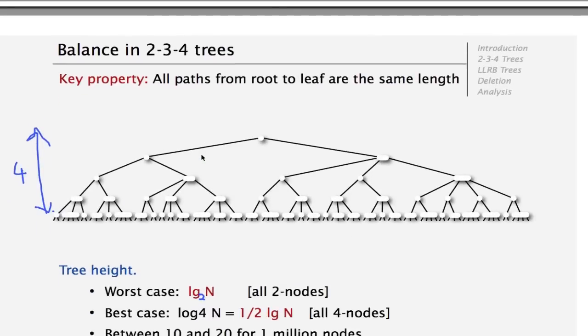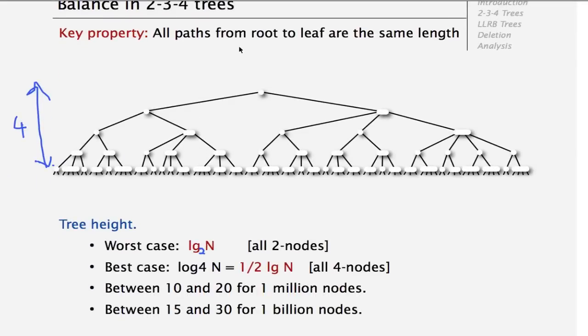And the main thing is to realize that we always have exactly the same distance from the root to any one of the leaves. So that means that we have a very tight bounds on how deep is the tree. So we're using the tree very well. And if all of the nodes are 2-nodes, which would make us deepest, we get log 2 of N levels to the tree.